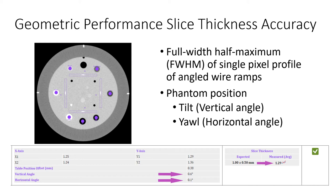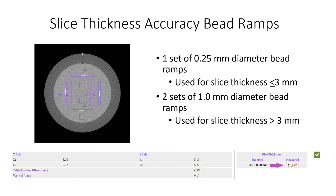Phantom rotation about the x and y-axis is estimated from the known measured slice thickness for each pair of ramps and the offset from the module center. Slice thickness accuracy using bead ramps: the measurement of slice thickness using the 0.25 mm and 1 mm spaced bead ramps in the CTP 591 module follows the same sampling method as just described for the wire ramps, with one exception that the baseline correction is modified due to the impact of volume averaging with different slice thicknesses, where the percentage of baseline correction applied increases with thinner slices. The number of peaks in the profile are counted and multiplied by the bead spacing, then converted to slice thickness using the tangent of the ramp angle.